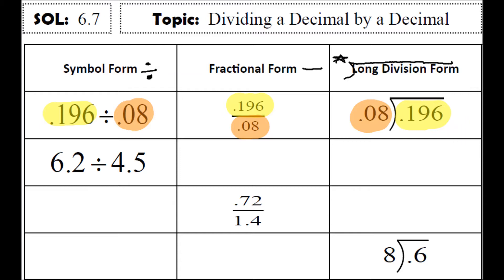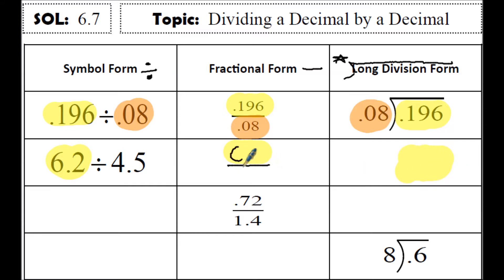This is the one — the long division form — that people normally mess up, because it looks like the 0.08 is first. So 6 and 2 tenths is the first number, so it should be the numerator, and 6 and 2 tenths should be inside the long division sign.